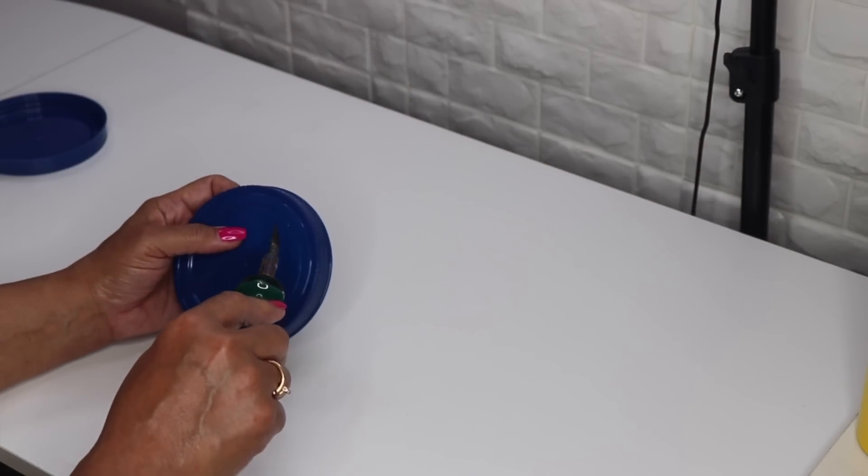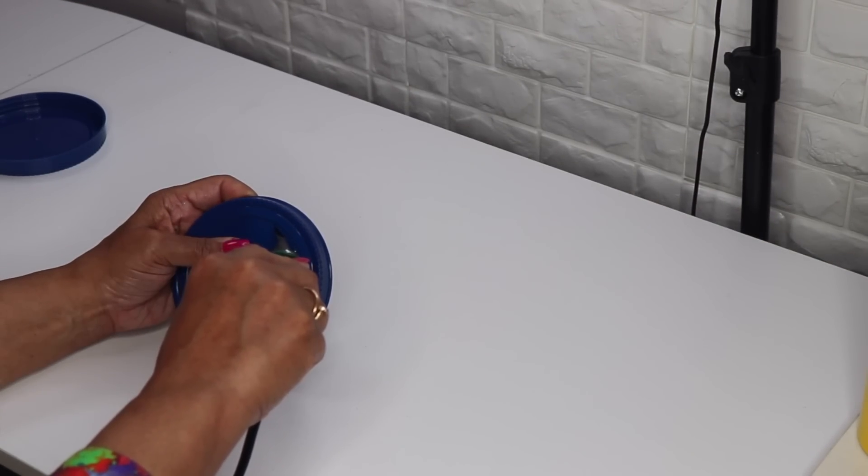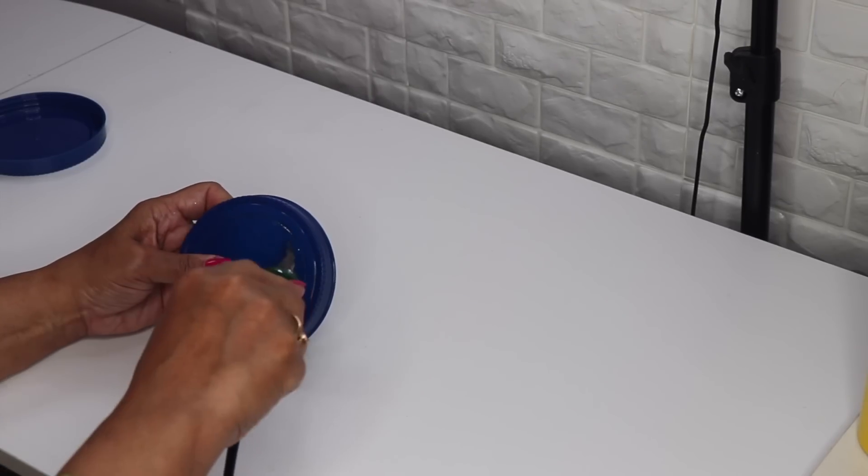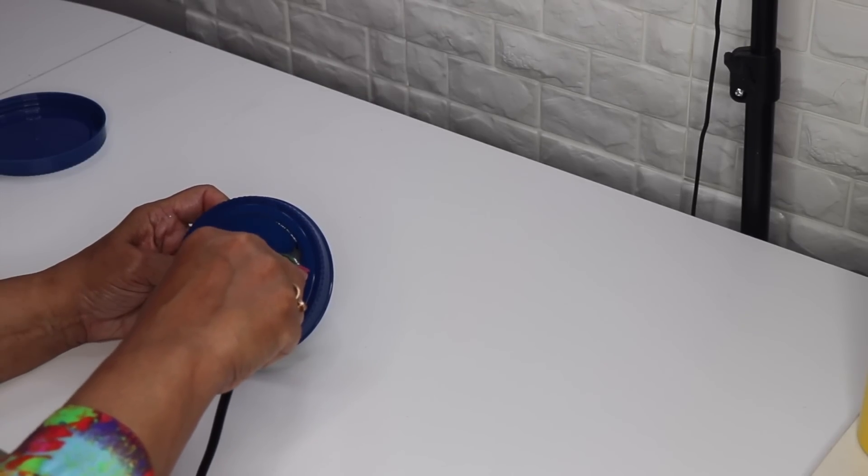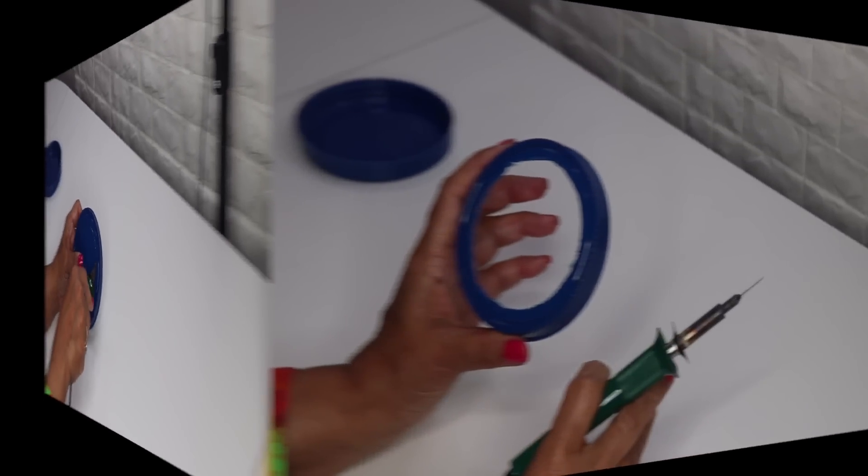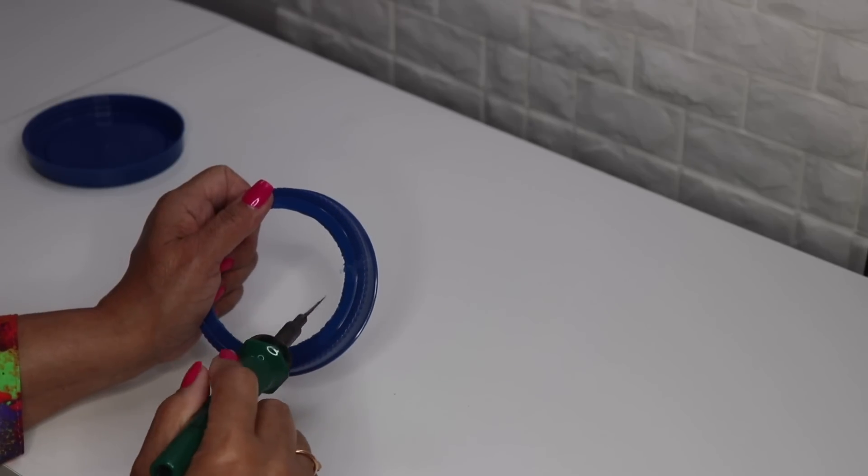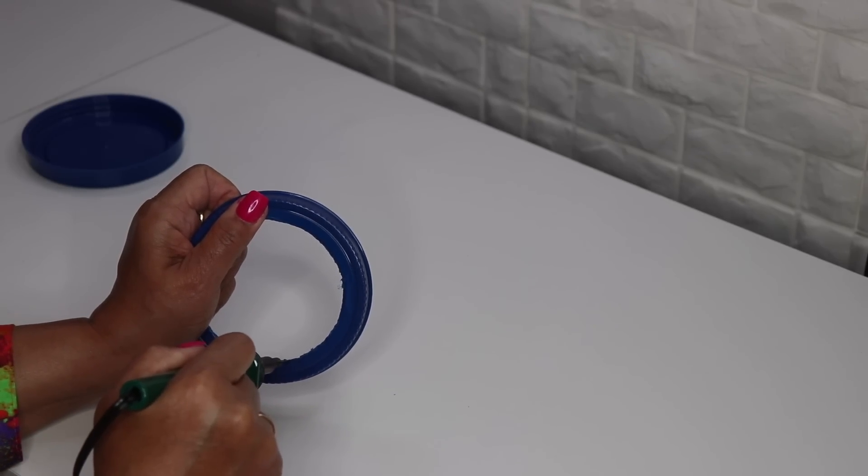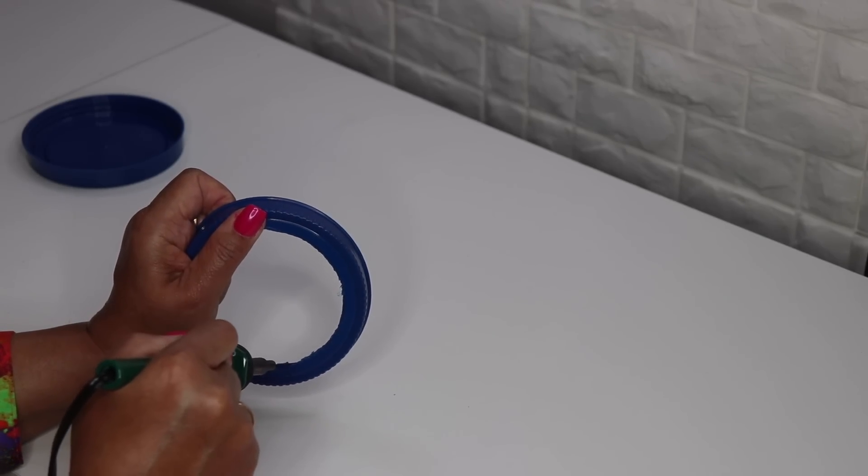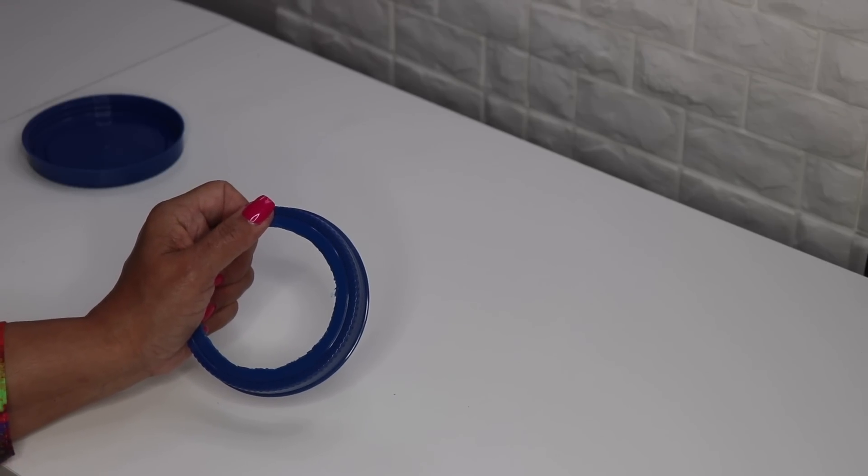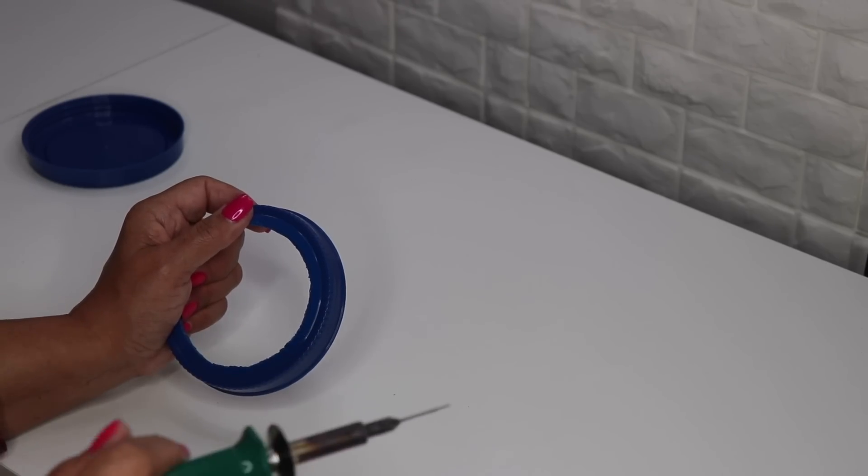I'm just gonna go around and score it a little bit. More than likely you'll have some rough spots, so what you want to do is just take your hot knife and slowly cut away what you have too much of.